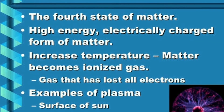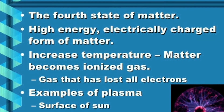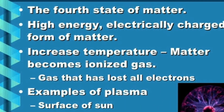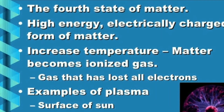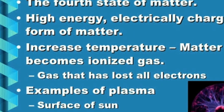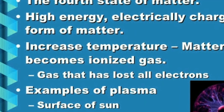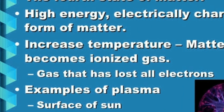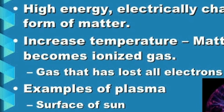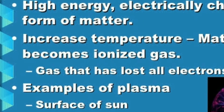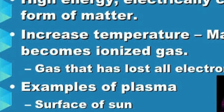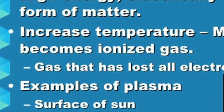This fourth state of matter contains high energy and is an electrically charged form of matter. The temperature is very high, and the matter becomes ionized gas — gas that has lost all electrons. Examples include the surface of the sun, fluorescent lights, and lightning.